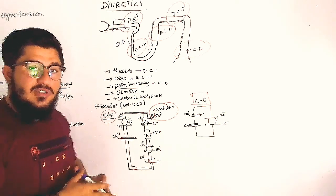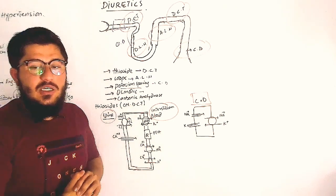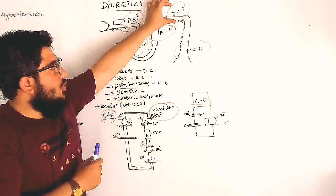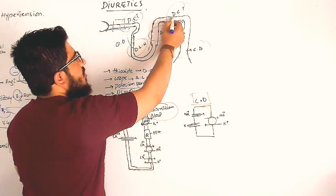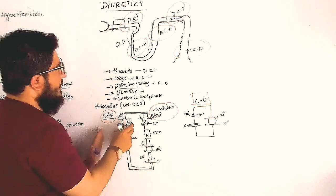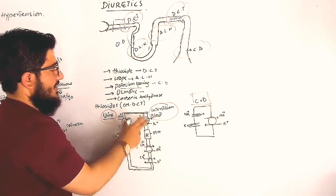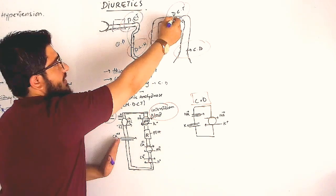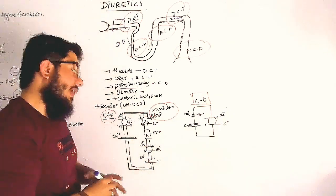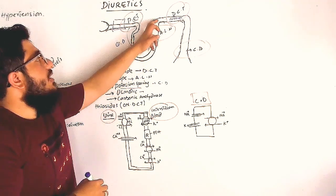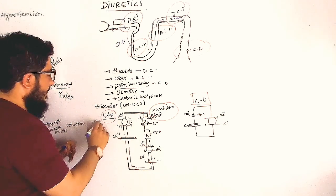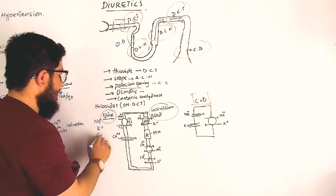We will start with thiazide because it has more relevant actions. At the distal convoluted tubule, there is a lumen where urine is stored, an epithelial cell, and some receptors and transporters. The key ions involved are sodium, potassium, water, calcium, and chloride.